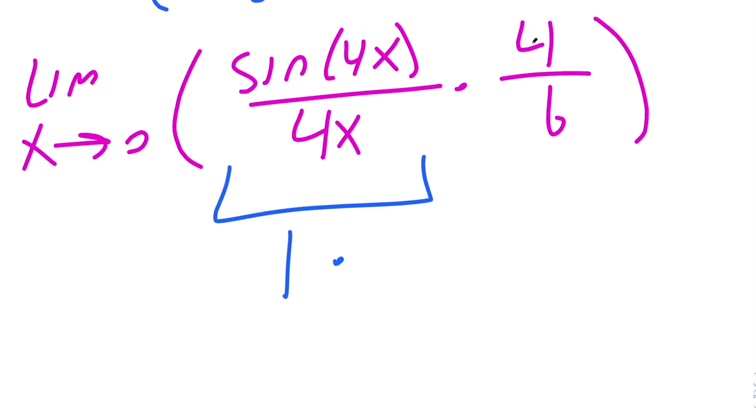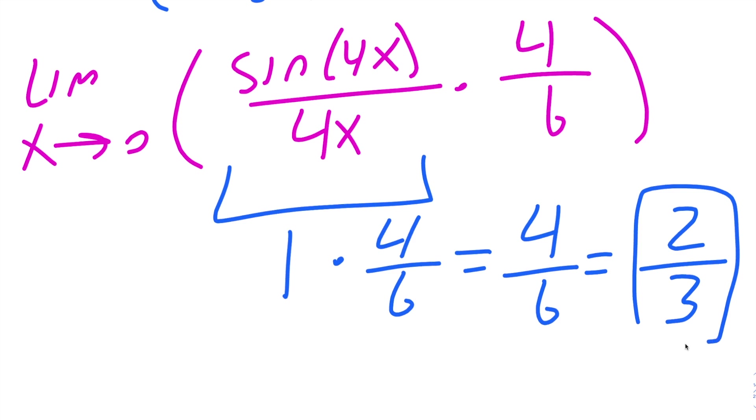But this piece is still 4 divided by 6. So 4 divided by 6. And when you multiply 1 times 4 divided by 6, you get 4 divided by 6. And you can simplify this if you divide the numerator and denominator by 2, you would get 2 divided by 3. And this right here is our final answer.